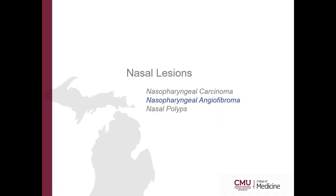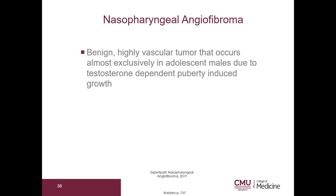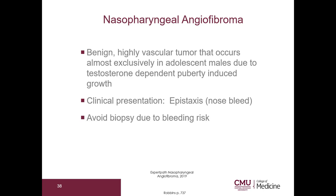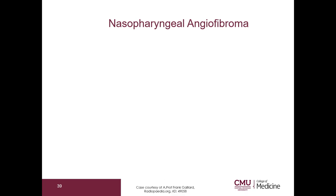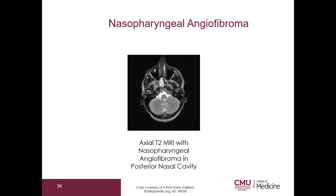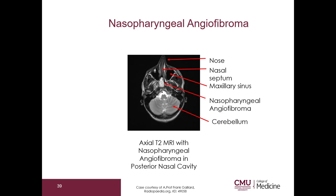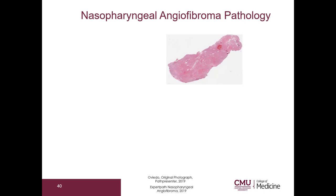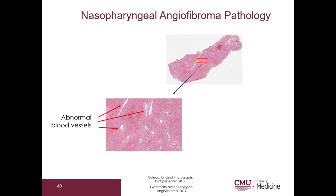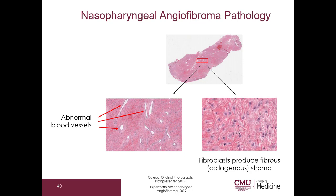Let's go on to nasopharyngeal angiofibroma. This is a benign highly vascular tumor that occurs almost exclusively in adolescent males due to testosterone-dependent puberty-induced growth. The clinical presentation is epistaxis, which means nosebleed. You should avoid biopsying this tumor because there is a very high risk of excessive bleeding. Here is an axial T2 MRI showing the nose, nasal septum, maxillary sinus, and cerebellum — and here of course is the nasopharyngeal angiofibroma. On pathology, you can see there are abnormal blood vessels and fibroblasts which produce a fibrous or collagenous stroma.